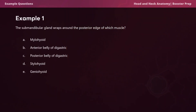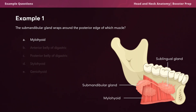Example question one: The submandibular gland wraps around the posterior edge of which muscle? Options are the mylohyoid, anterior belly of the digastric, posterior belly of the digastric, stylohyoid, or geniohyoid. The correct answer is the mylohyoid. The submandibular gland is located in the submandibular fossa on the medial aspect of the mandible and contains a superficial and deep lobe divided by the mylohyoid muscle — a high-yield topic.